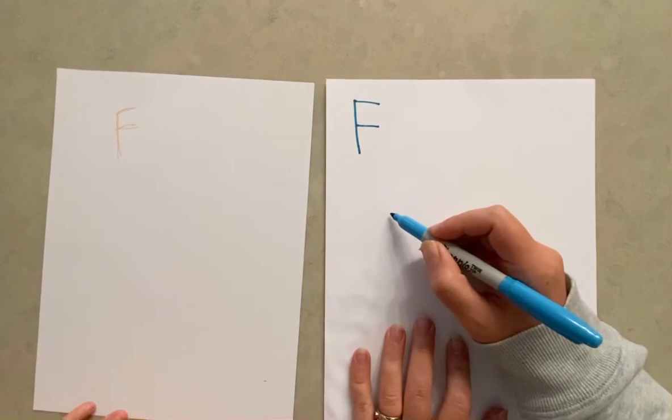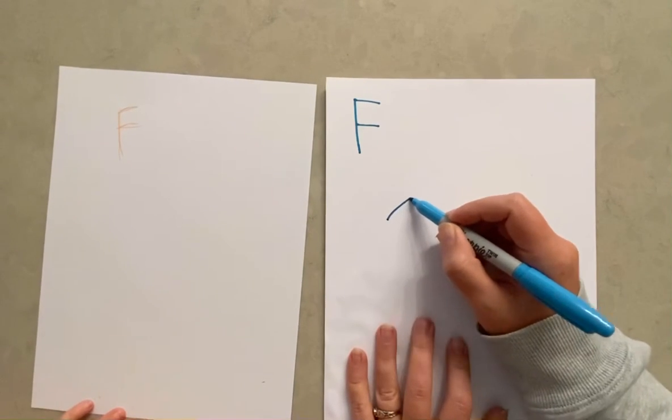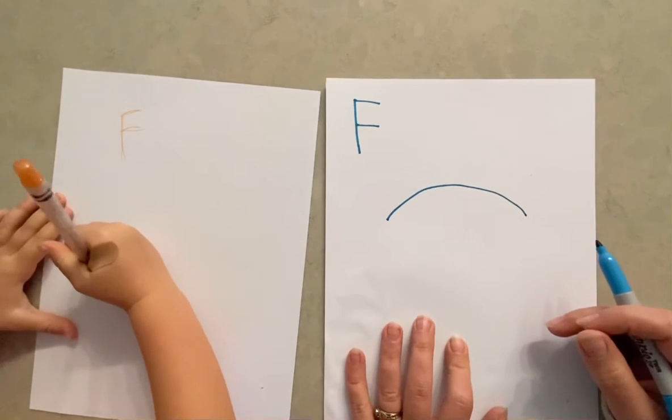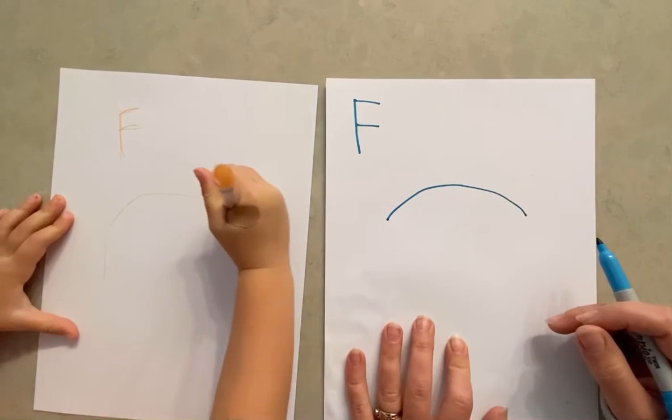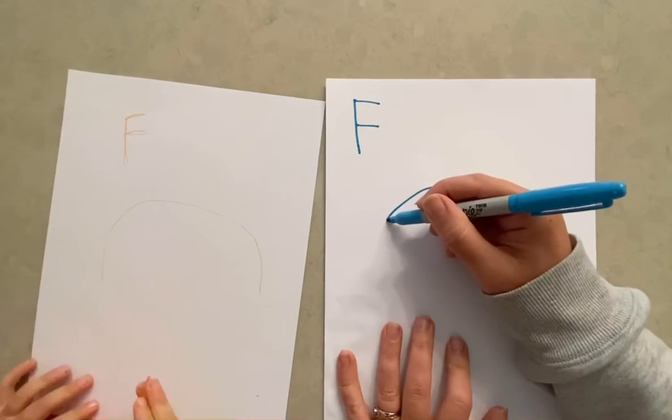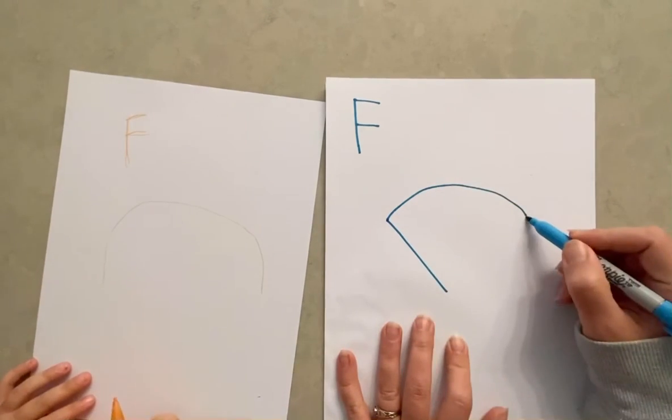We're going to make a really wide hill, and stop, and we're going to come down and make a triangle. This will be the head of our fox.